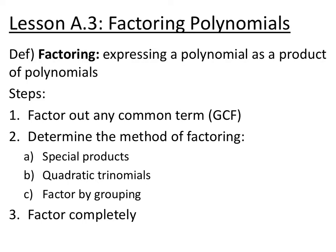Section A.3 is about polynomials, and we're going to look specifically at factoring polynomials. Factoring is expressing a polynomial as a product or multiplication of multiple polynomials. The basic steps to factoring are: if there are any common terms — a greatest common factor — factor that out first, then determine the best way to factor it, whether it's a special product, a quadratic trinomial, or factor by grouping if it has four terms, and then factor it completely.